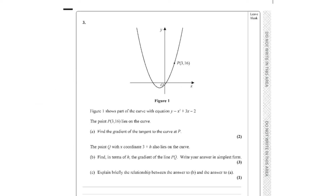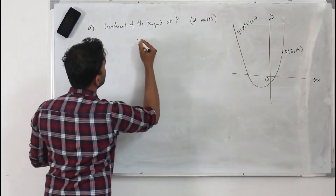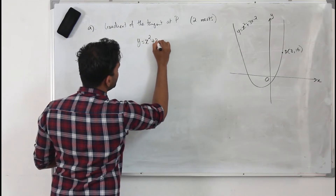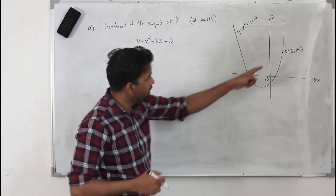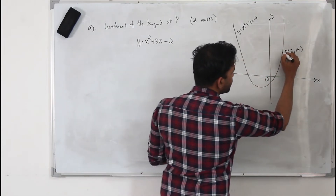Question 3: a parabola is given with point P(3, 16), and the equation of the parabola is y = x² + 3x - 2. The point lies on the curve. The question asks you to find the gradient of the tangent to the curve at point P. You are shown a diagram of the parabola with point P(3, 16) marked, and you need to find the gradient of the tangent at that point.